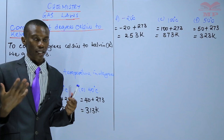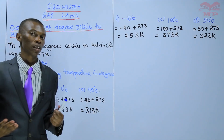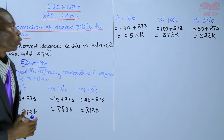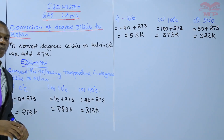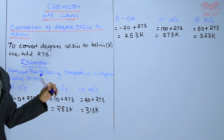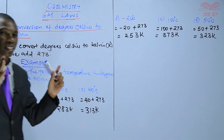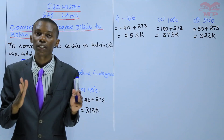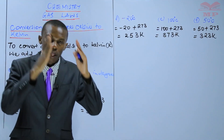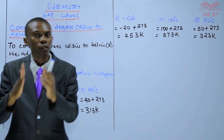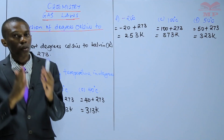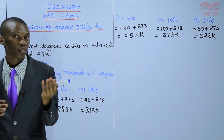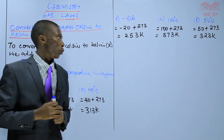To ensure that you are able to convert any temperature from degree Celsius to Kelvin, you just need to add 273. Even if you are given 1000 degree Celsius, you add 273 to get 1273 Kelvin. I hope that is a simple task you can do.